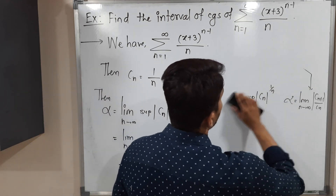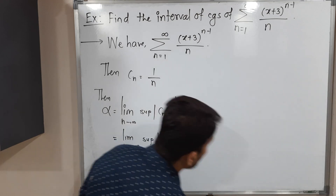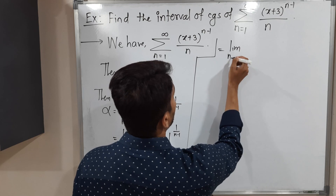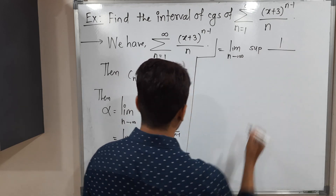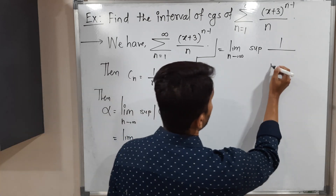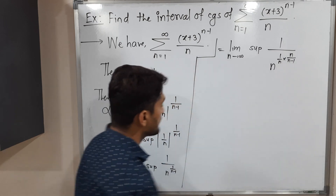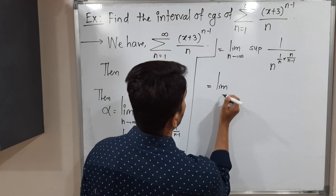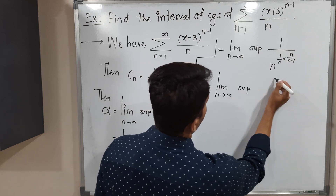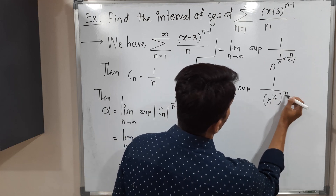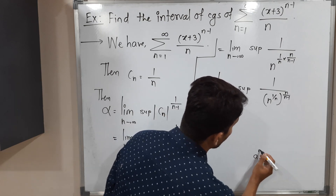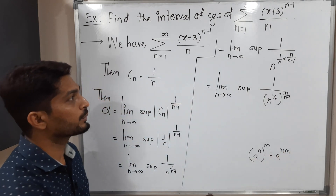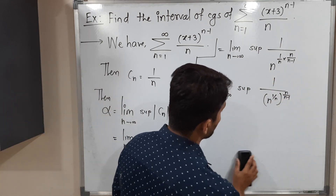Let us use this space to solve the remaining part. This equals the limit as n tends to infinity of the supremum of 1 upon n raised to (1/n) times (n/(n minus 1)). I am making a small adjustment by multiplying the power's numerator and denominator by n. Using the rules of indices — a raised to n raised to m equals a raised to nm — we can write n raised to (1/n) raised to the power n/(n minus 1).